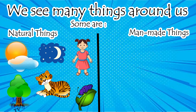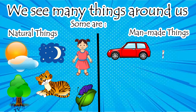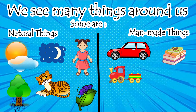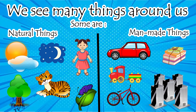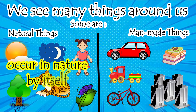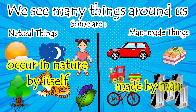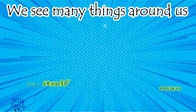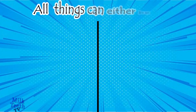Things like cars, books, toys, bicycles, and the buildings around us are man-made things. Natural things are those that occur in nature by itself — made by God or nature. Man-made things are created by human beings. These are lifeless or non-living things.